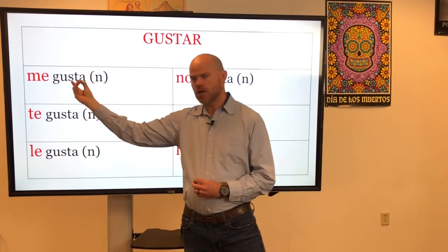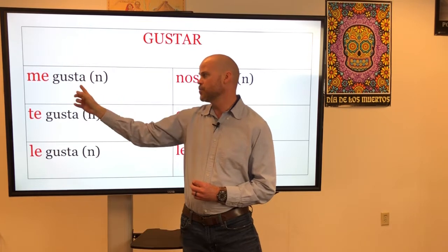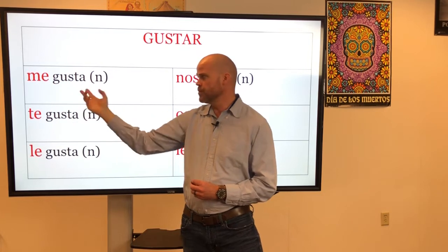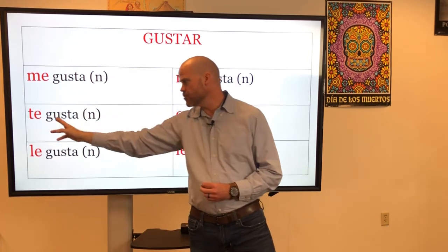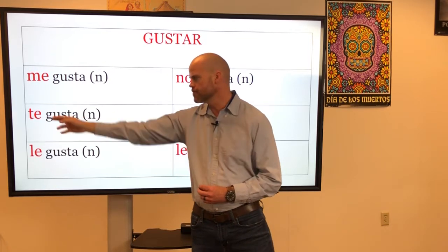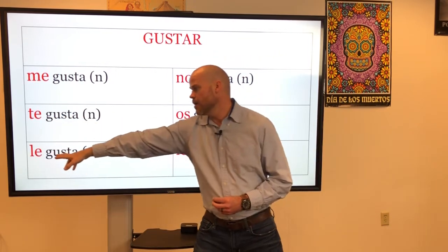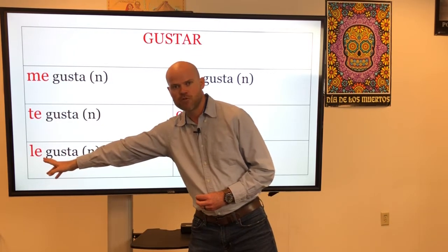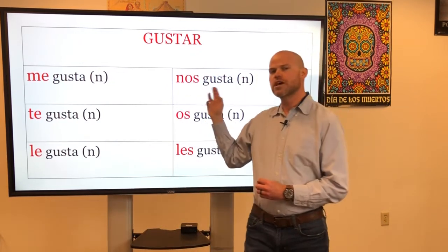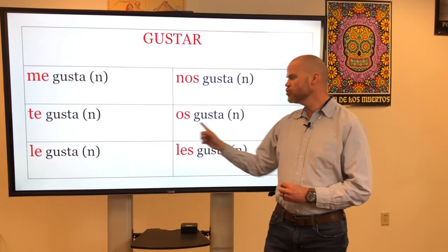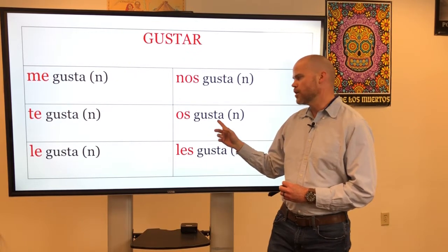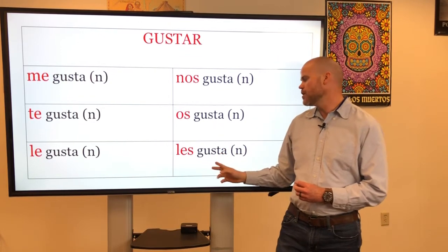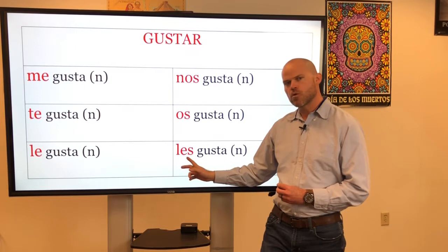When I say me gusta in Spanish, that literally translates to it pleases me. In English though, we say I like. So me gusta means I like, but it's literally it pleases me. Te gusta would be you like, or it pleases you. Le gusta would be he or she likes, or you formal — it pleases he, she, or you formal. Nos gusta would be we like, or it pleases us. Os gusta would be you all like, or it pleases you all. And les gusta would be it pleases you all, or you all like.